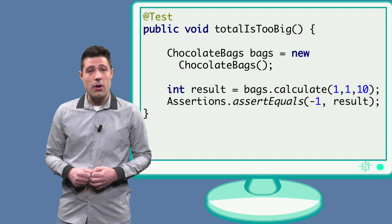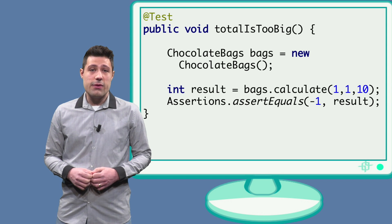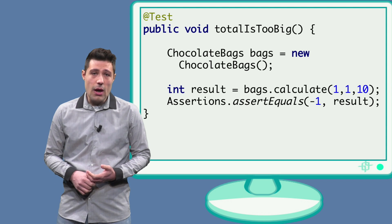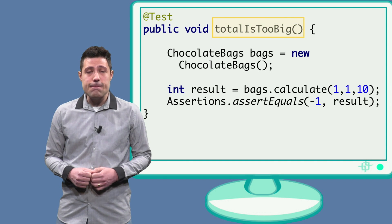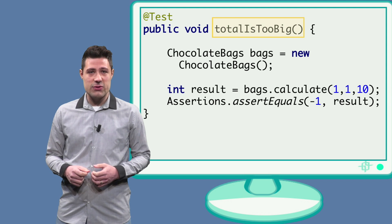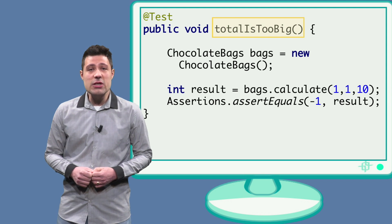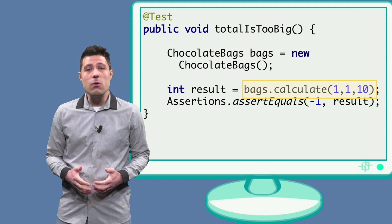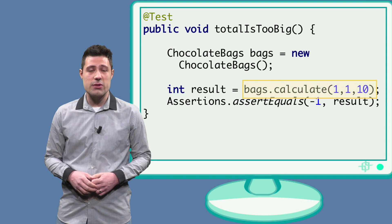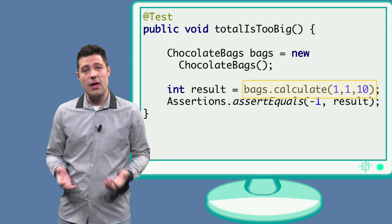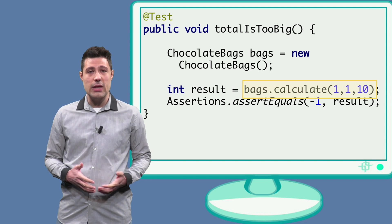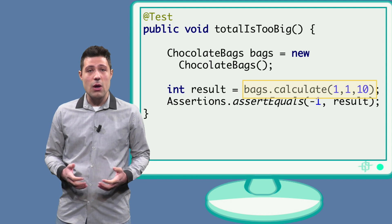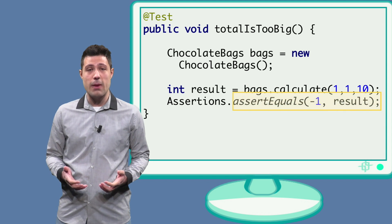If we automate the four partitions we thought about using JUnit, the test for the first partition will look like this. We name the test as 'total is too big' so that we can understand what this test is about. We instantiate the class under test and invoke the method under test, passing a concrete input that represents that partition — in this case, small equals 1, big equals 1, total equals 10. As soon as the method returns a result, we then assert that the result is minus 1.